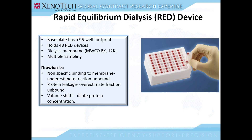Such that the unbound drug is in equal concentrations on both sides of the membrane. At Sekisui Xenotech, we offer the equilibrium dialysis method using the RED device. The RED device has a base plate which has a 96-well footprint and it holds 48 RED devices. The dialysis membrane has two sizes — a molecular weight cutoff of 8 kilodaltons or 12 kilodaltons — and hence multiple sampling is possible. The drawbacks of this method are that the drug may bind to the semi-permeable membrane, hence there is non-specific binding. If the membrane is damaged, protein might leak from the donor side to the buffer side and hence you would overestimate the fraction unbound.